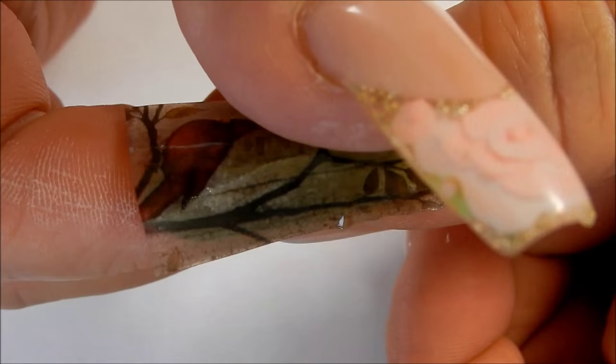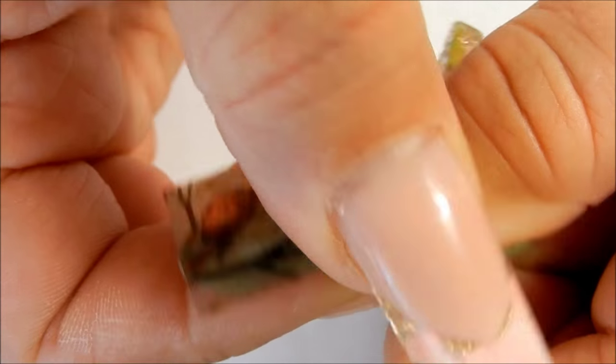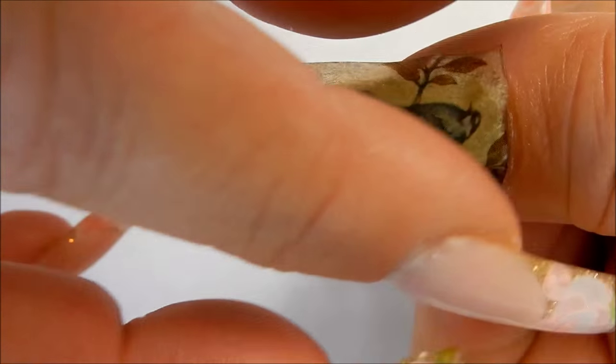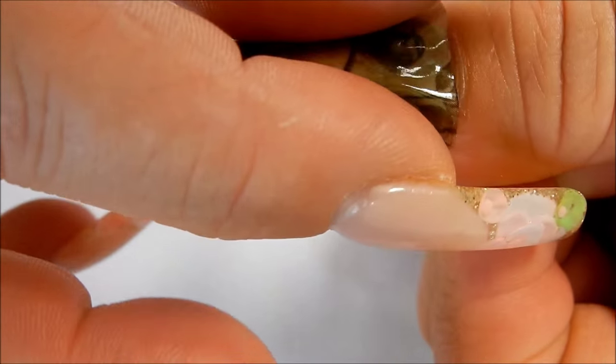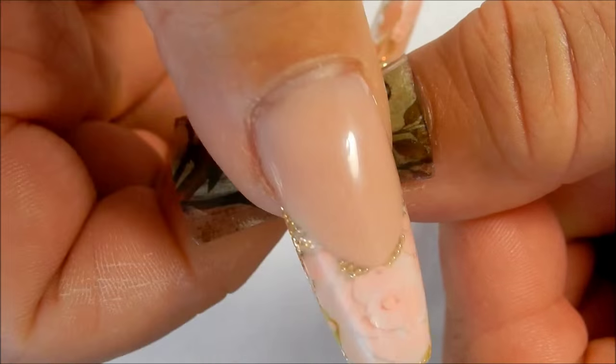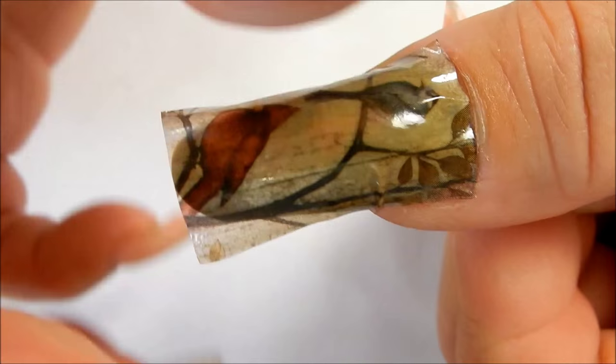Smooth out any wrinkles and you can use acetone and nail polish remover to clean up the edges. Just keep pushing it, pushing out all the wrinkles.